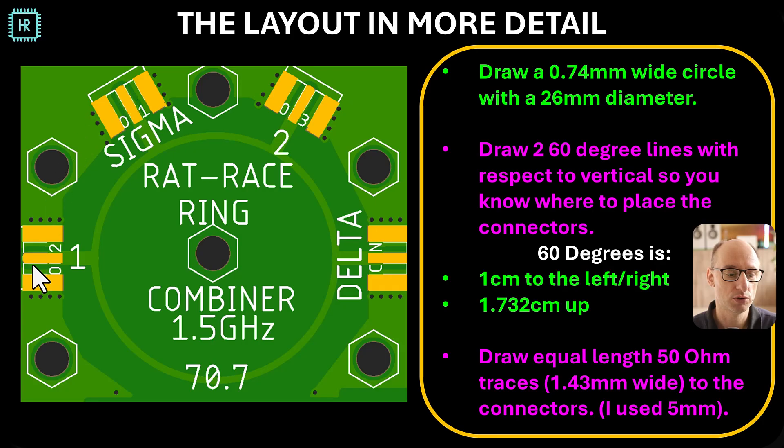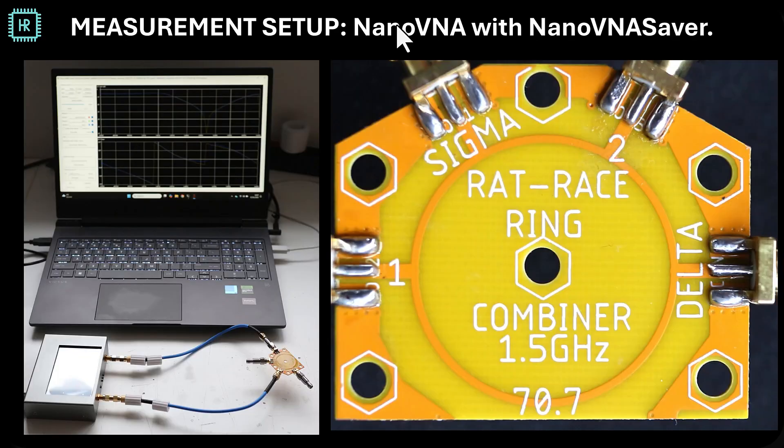So you draw these lines, then you need to draw equal length 50 ohm lines from this circle to the connectors. What I would do is I would draw another circle with a larger diameter—actually this would be the outside of the circle and this would be the center—so you can place those connectors at exactly the same distance from the rat race ring circle. And I made these traces 5 millimeters long and a width of 1.43 millimeters. So it's really really simple to design, and this is what it actually looks like on the right.